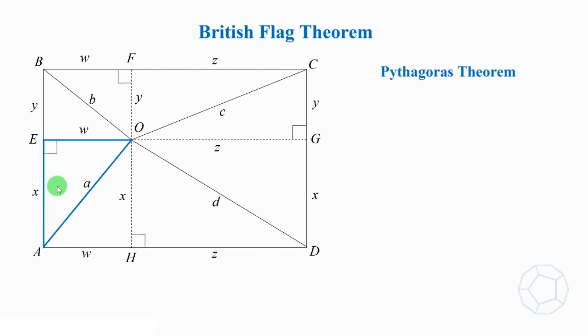In triangle OAE, w² + x² = a². Let's call this equation 1. In triangle OBF, w² + y² = b². Let's call this equation 2.